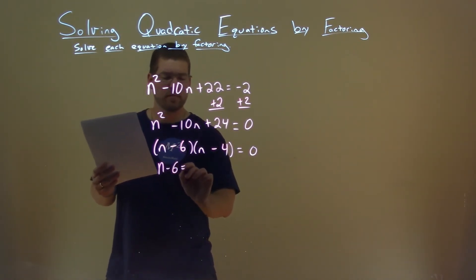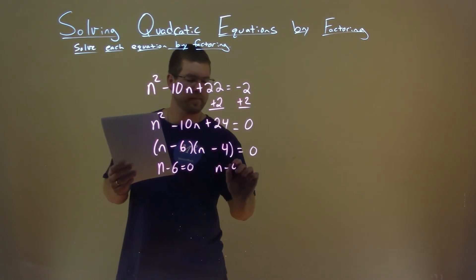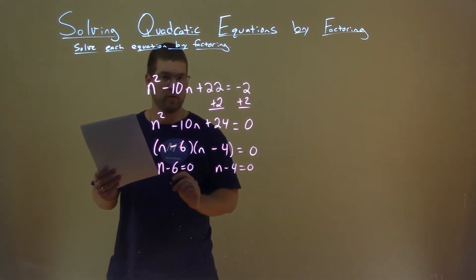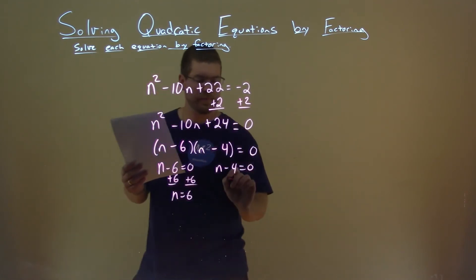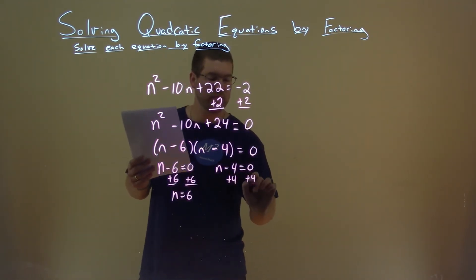We can set both parts equal to 0. And now we're solving for our variables. Add a 6 to both sides, n equals positive 6. Add a 4 to both sides, n equals a positive 4.